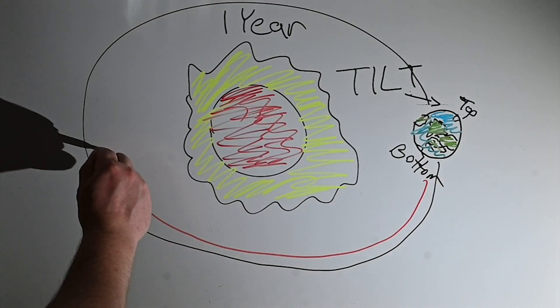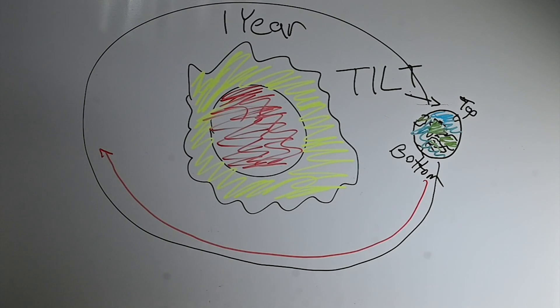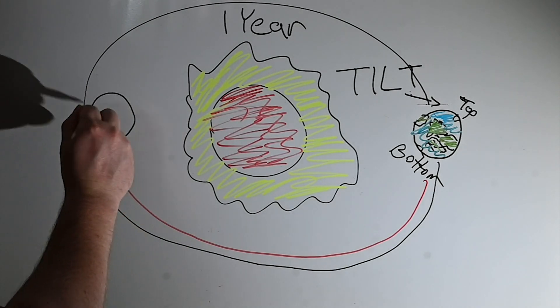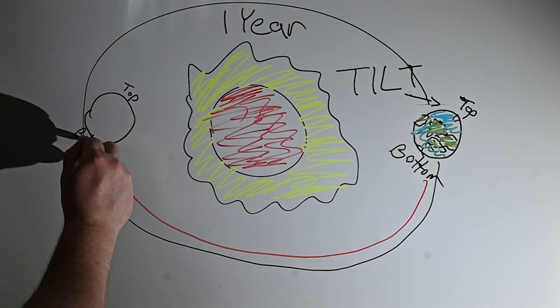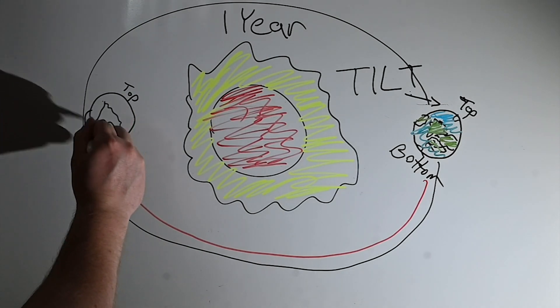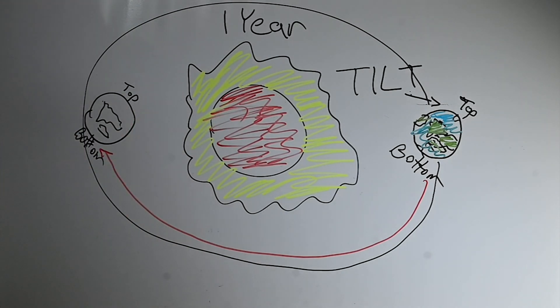So when it's on one side of the Sun, the northern hemisphere is angled away from it, while the southern hemisphere is closer towards it. When it's on the other side, the northern hemisphere is angled towards the Sun, while the southern hemisphere is away from it.